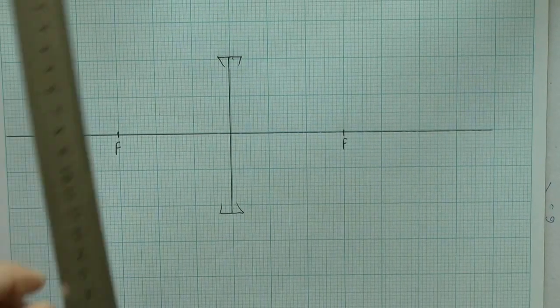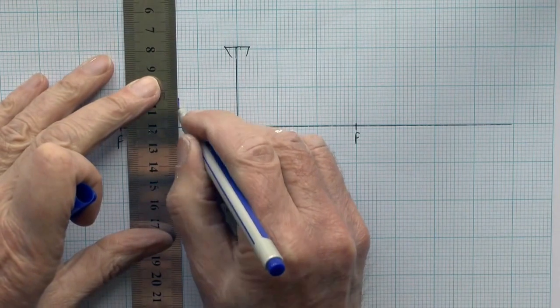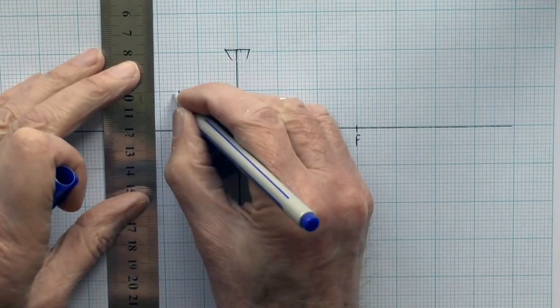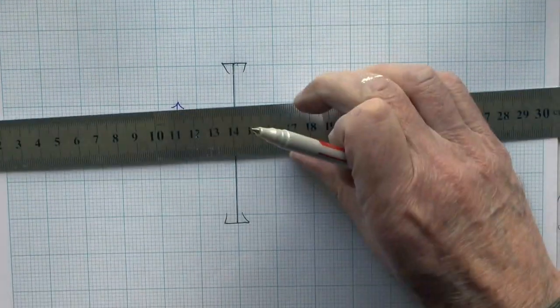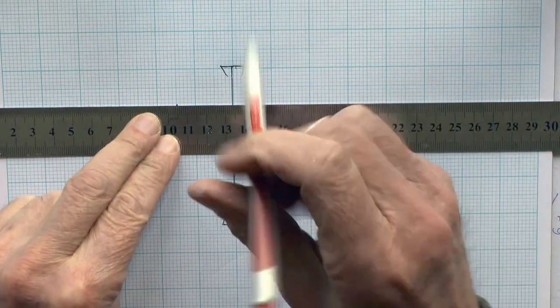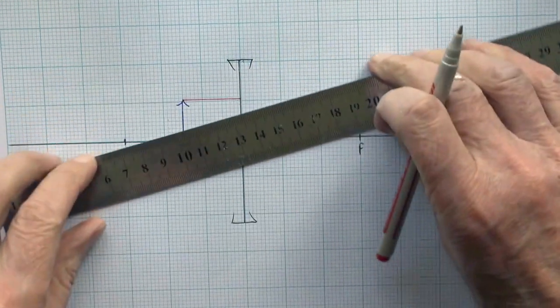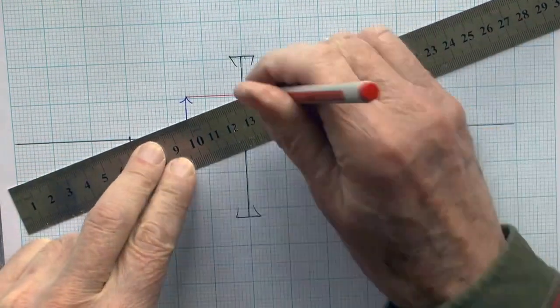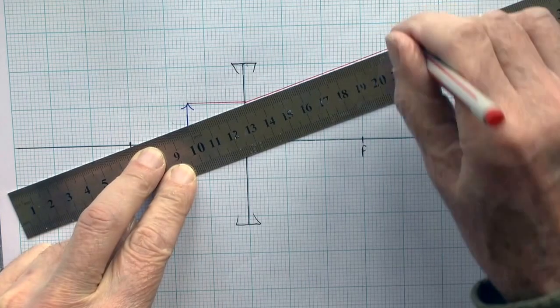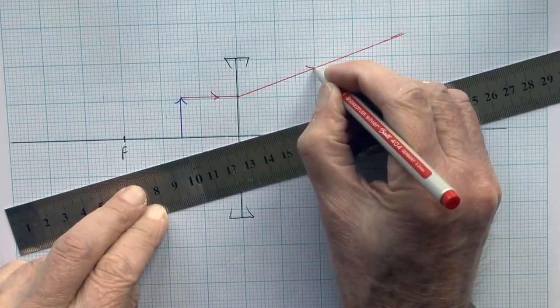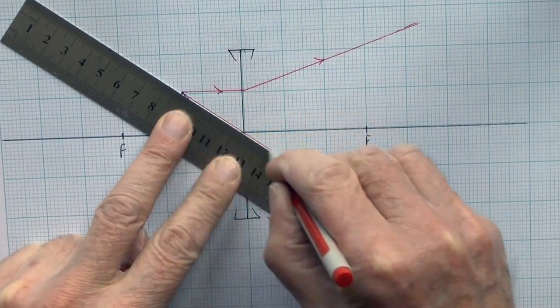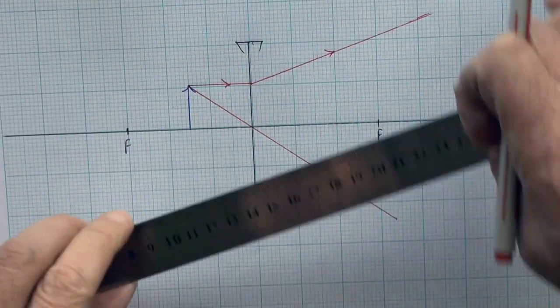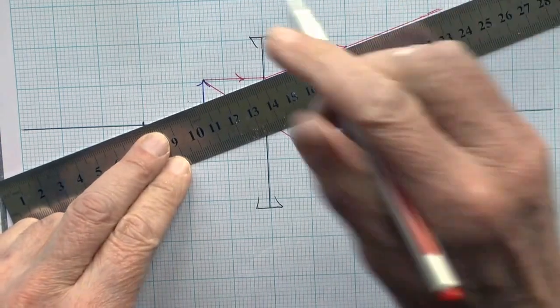A final third ray diagram, this case with an object closer to the lens, well within the focal length. So using the same technique, one ray of light from the top of the object perpendicular to the lens is diverged outwards as if it is coming from the focal point. A ray of light from the top of the object will also go through the center of the lens without being deviated.